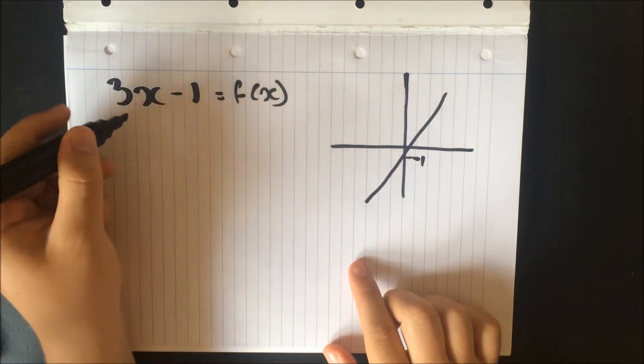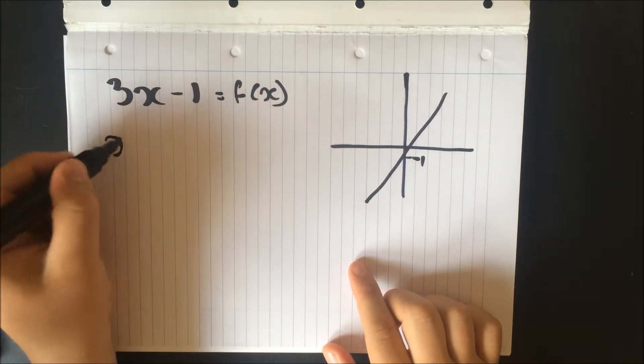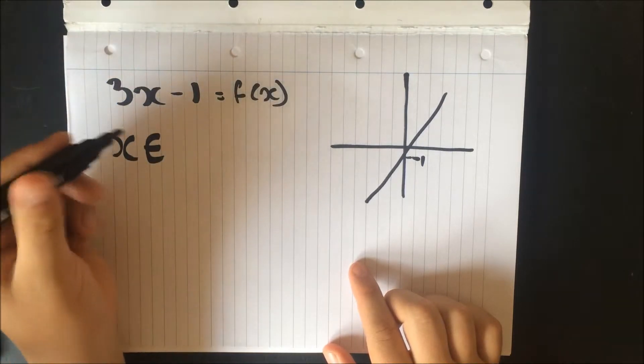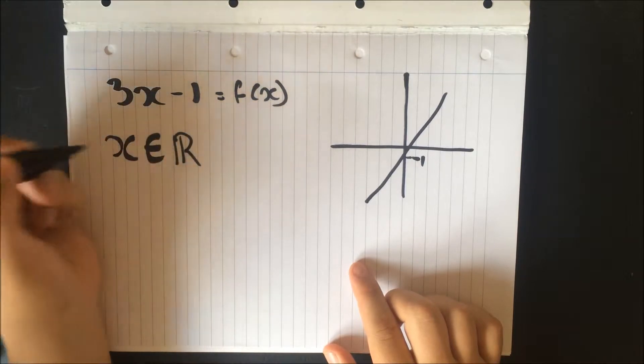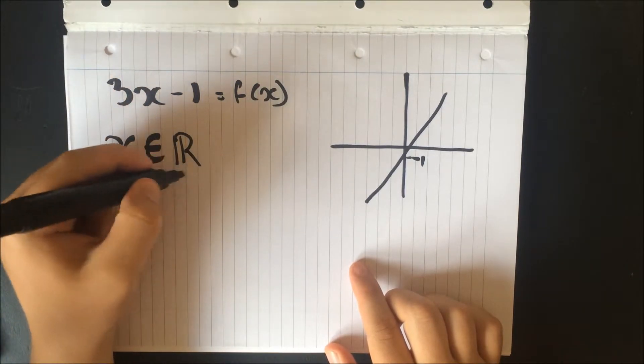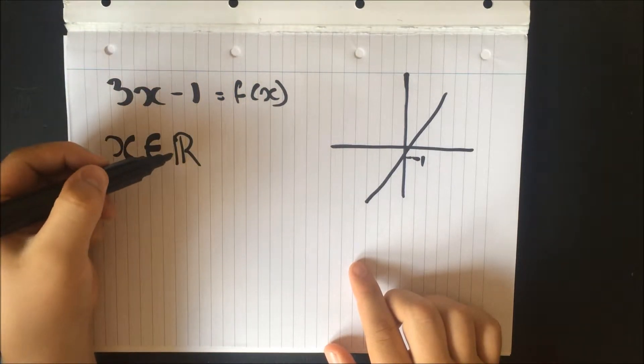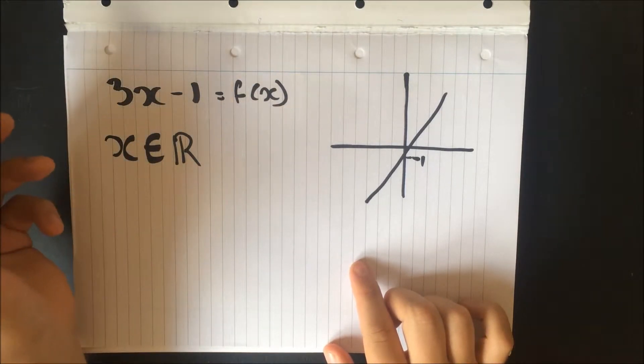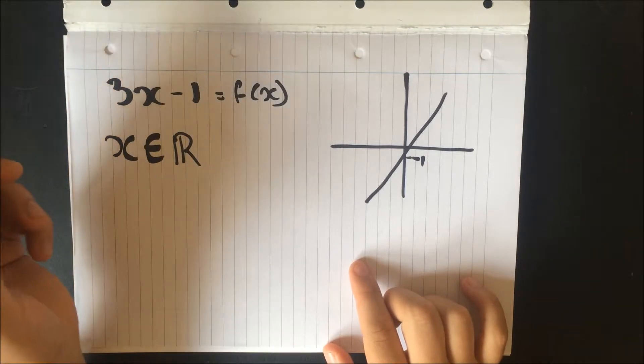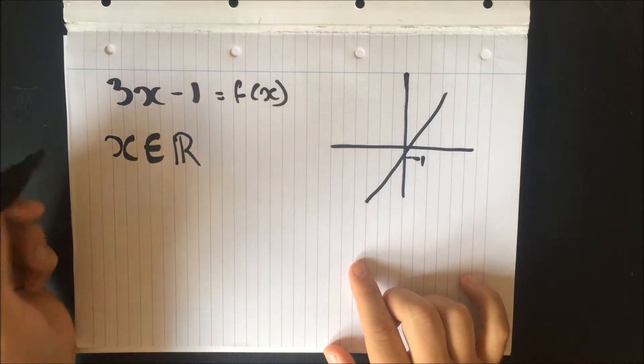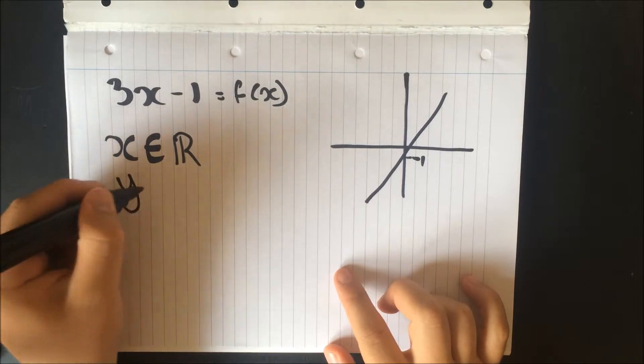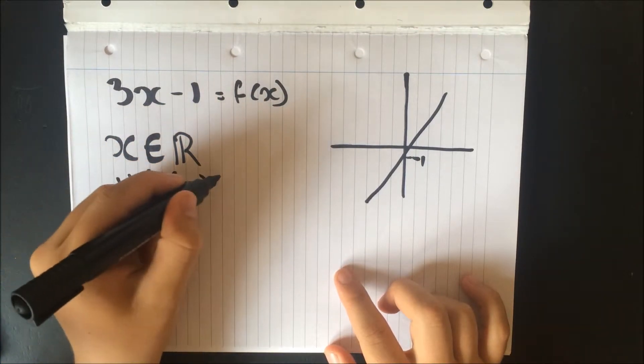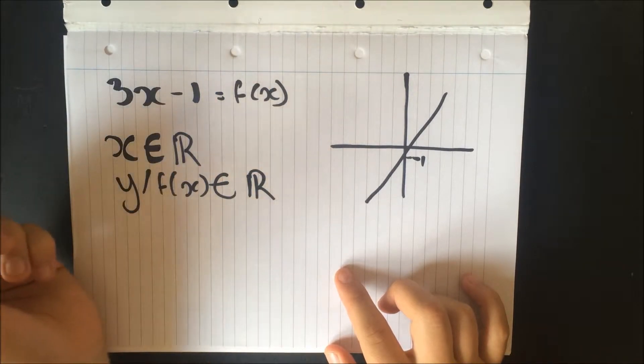So it can be any x value. So what we say with this is x can be in the subset, so x is a part of the group of real numbers. We know this from core 1 is the real number symbol. So any real number, so it can't be an imaginary number, it's got to be a real number. So then we also said that y can take any value, so you can also say y or f(x) can be the subset of the real numbers.